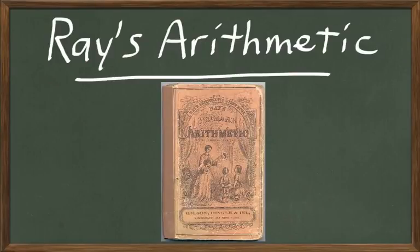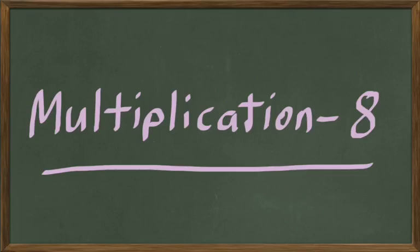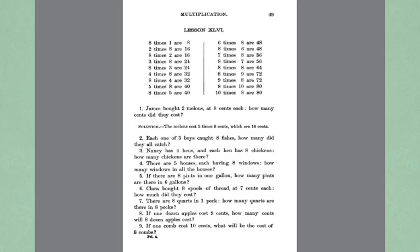Welcome back to Ray's Arithmetic course. We are doing lesson number 46 in the primary book, the Ray's New Primary Arithmetic book. We're going to be doing multiplication with the number 8. Last time we did multiplication with the number 7, today we're going to do it with the number 8.